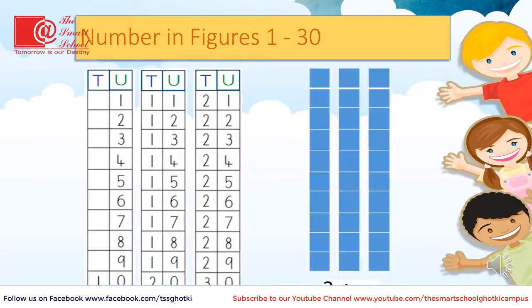Now we all count numbers one till thirty together: 1, 2, 3, 4, 5, 6, 7, 8, 9, 10, 11, 12, 13, 14, 15, 16, 17, 18, 19, 20, 21, 22, 23, 24, 25, 26, 27, 28, 29, 30.